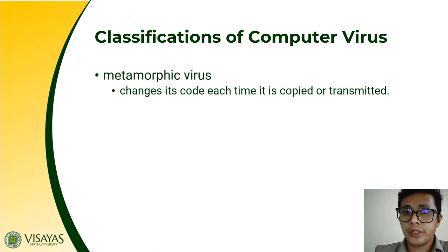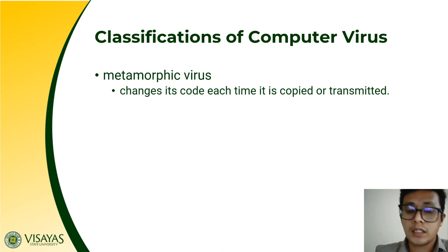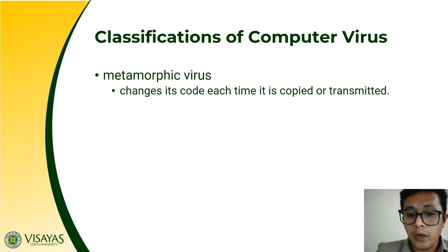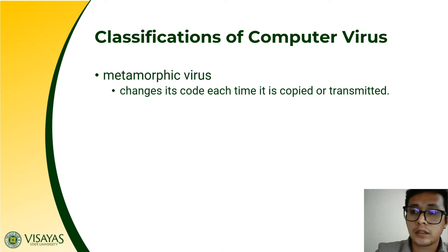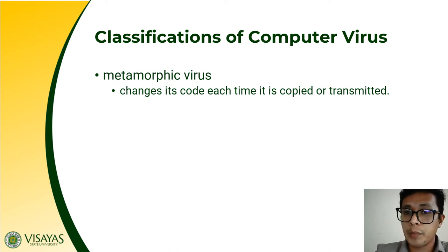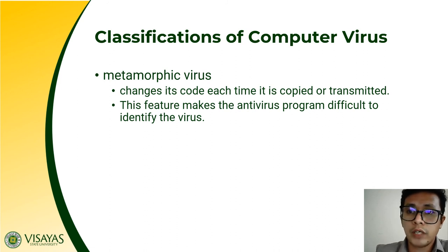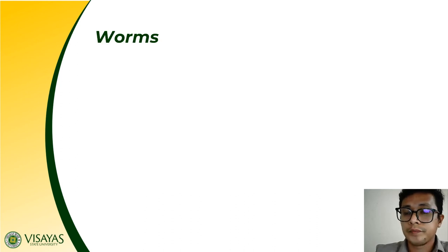We also have the metamorphic virus. Polymorphic changes its virus signature each time it is copied or transmitted. When you say metamorphic, it changes its entire code each time it is copied or transmitted. Unlike polymorphic which only changes its virus signature, the metamorphic changes its code each time it is transmitted or copied. This feature makes the antivirus program difficult to identify the virus. Those are the different types of viruses.